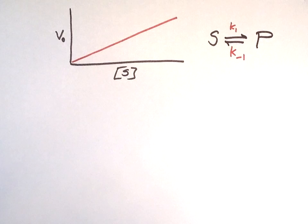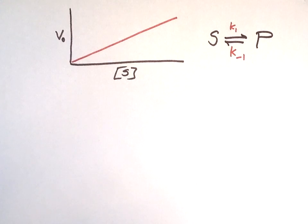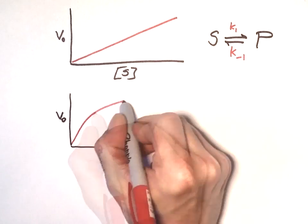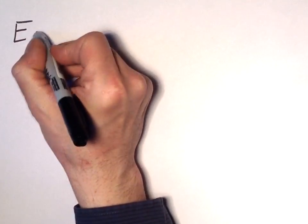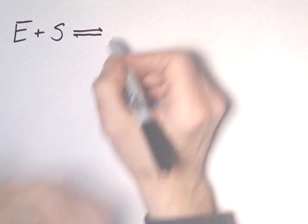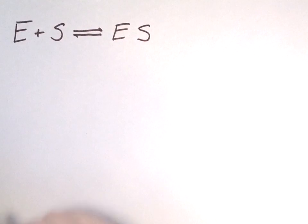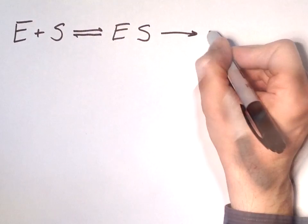However, if we do this for enzyme reactions, even for simple ones that just convert one molecule of S to one molecule of P, we get a hyperbolic correlation between V0 and S. Even a simple enzymatic reaction happens in two steps: first, the association of enzyme and substrate to an enzyme-substrate complex ES, and then the conversion of enzyme-bound substrate to product, which is then released.